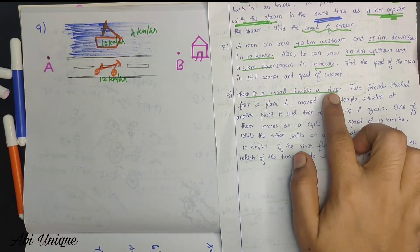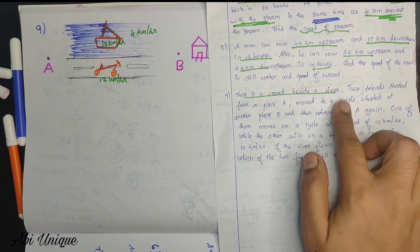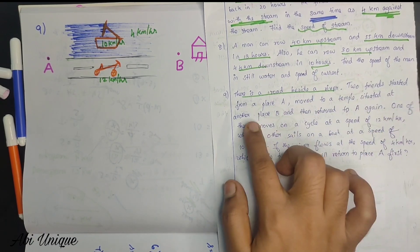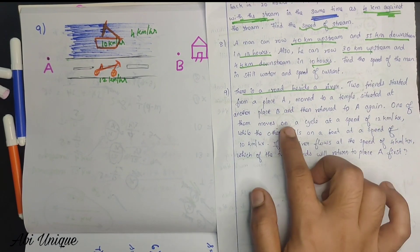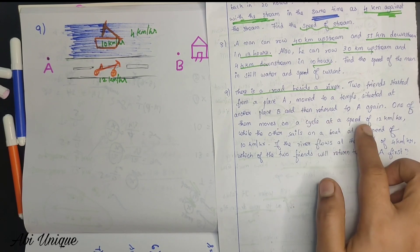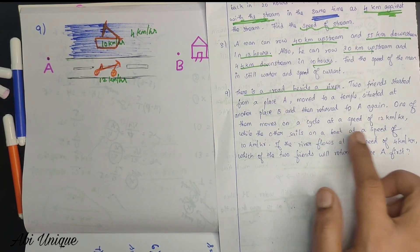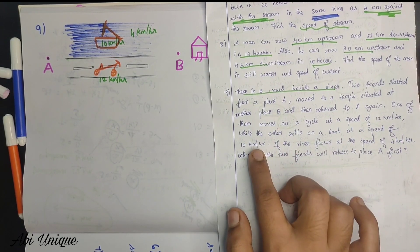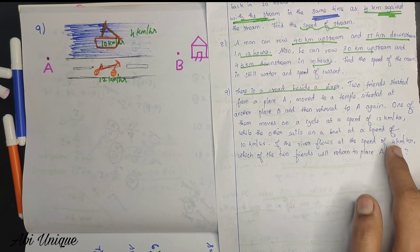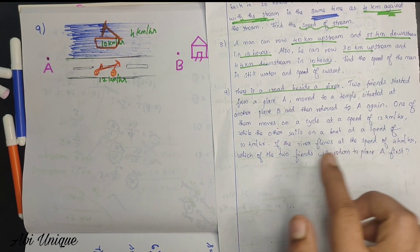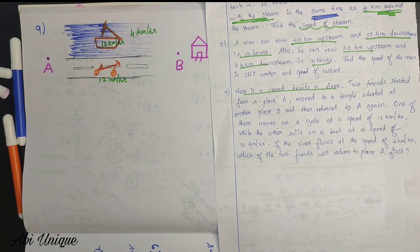There is a road beside a river. Two friends started from a place A and moved to a temple situated at another place B, and then returned to A again. One of them moves on a cycle at a speed of 12 km per hour, while the other sails on a boat at a speed of 10 km per hour. If the river flows at a speed of 4 km per hour, which of the two friends will return to place A first?